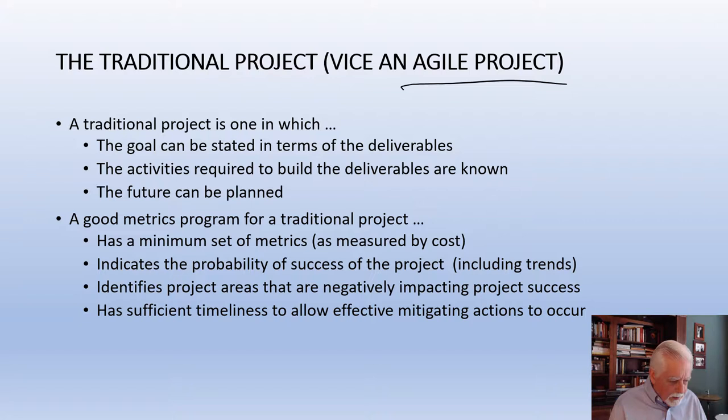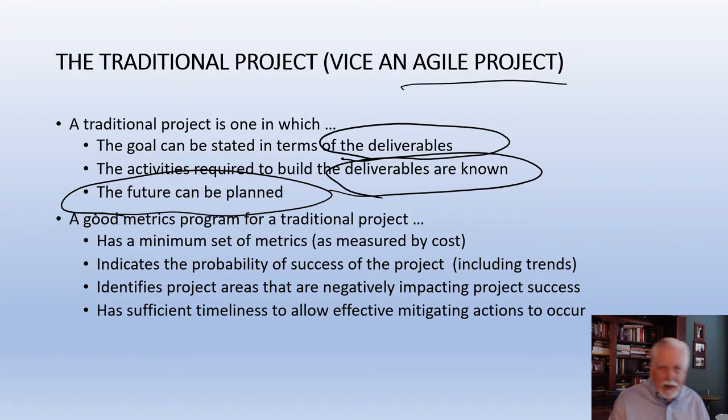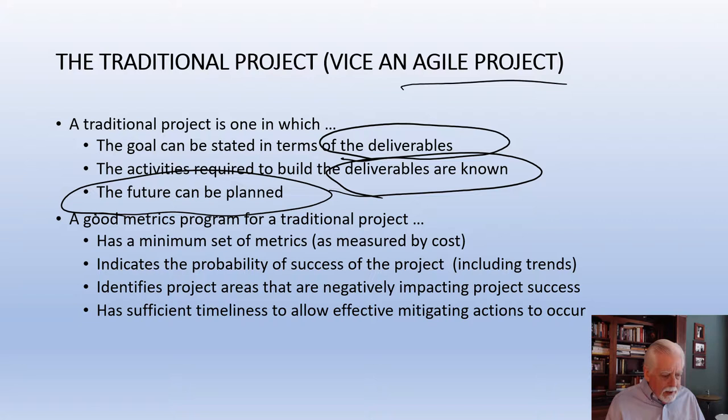Let's look at a traditional project versus an agile project. A traditional project is one in which the goal is stated in terms of the deliverables — we know what we're building — and the activities required to build those deliverables are known, so the future can be planned. In an agile project, we don't plan the future, we adapt to it, and the goal is stated in terms of the user's needs. For now, let's concentrate on the traditional project.